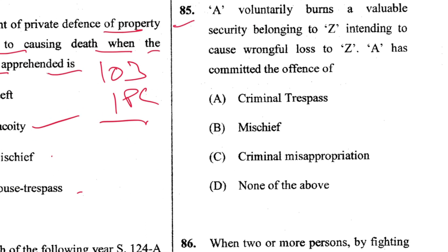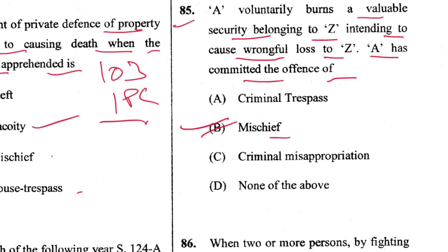Question 85: A voluntarily burns a valuable security belonging to Z, intending to cause wrongful loss to Z — A has committed the offence of mischief. B is the answer. This is illustration (a) to Section 425 of IPC.